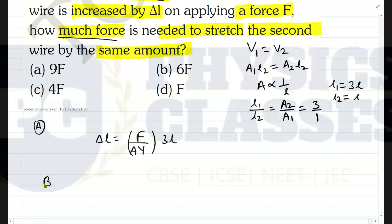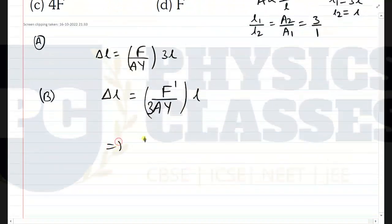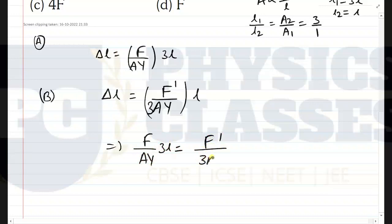For wire B, change in length becomes force on wire B, area of cross-section is 3A, Young's modulus Y, and length is L.